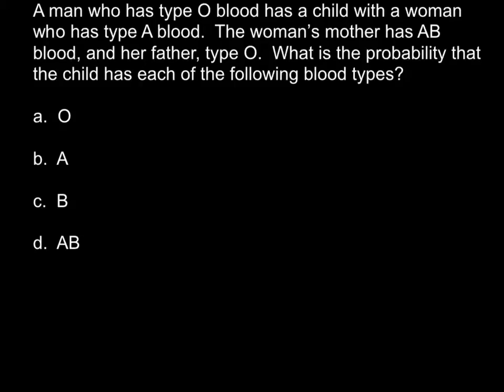A man who has type O blood has a child with a woman who has type A blood. The woman's mother has AB blood and her father type O. What is the probability that the child has each of the following blood types?